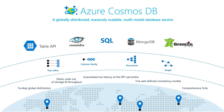Cosmos DB provides turnkey global distribution for your data. Just simply add a region to your Cosmos DB account and we'll replicate all of your data seamlessly anywhere around the world. This allows you to elastically scale your storage and throughput for your applications. Cosmos DB also provides multiple consistency models, allowing you to tune performance and consistency, all with single-digit latency and five nines availability anywhere in the world, backed up by comprehensive SLAs.